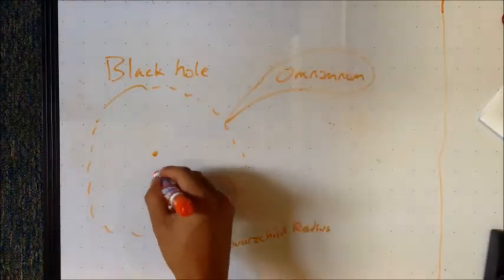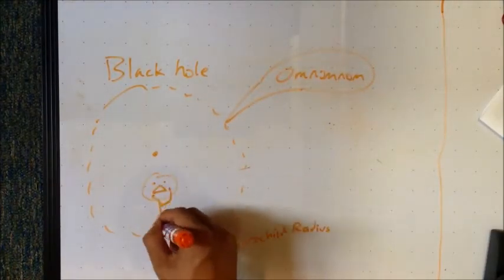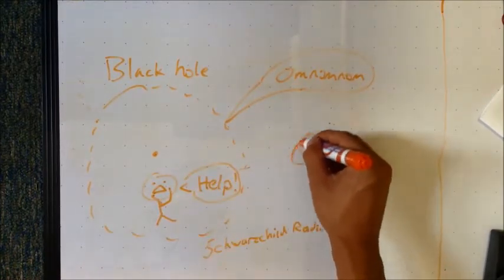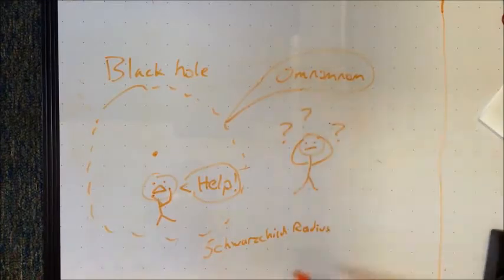Since light cannot escape, no information from the inside of the event horizon can reach the outside, so the event horizon signifies the limit from which information from near the black hole can no longer reach the outside world.